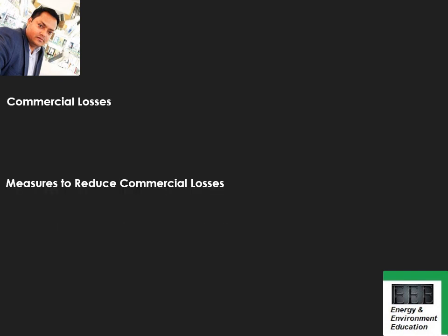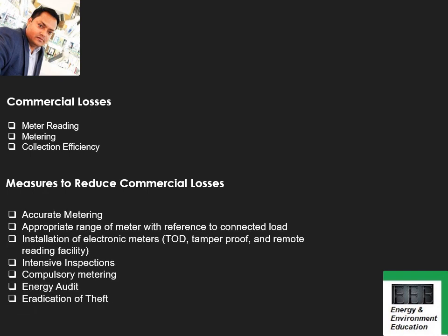As far as commercial losses are concerned, there are three types: meter reading errors, metering issues, and collection efficiency problems. Measures to reduce commercial losses include: accurate metering, appropriate range of meter with reference to connected load, installation of electronic meters with TOD, tamper-proof, and remote reading facilities, intensive inspections, compulsory metering, energy audits, and eradication of theft. You can refer to the book for detailed explanation.